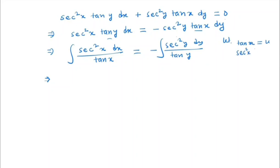So sec²x dx equals du. So in the left-hand side it will be sec²x dx / u, which becomes du / u.